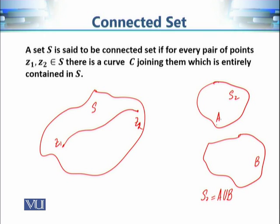If we choose a point Z1 in component A and a point Z2 in component B, any curve joining Z1 and Z2 is not entirely contained in S2. Therefore S2 is not a connected set.